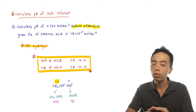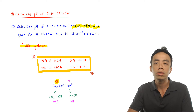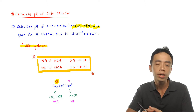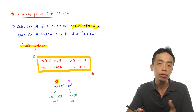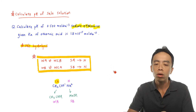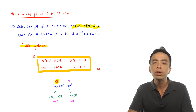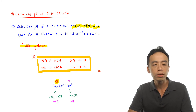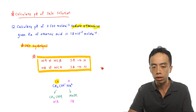For a strong base, dissociation also gives a neutral counter ion. For example, sodium hydroxide dissociates to give Na⁺ and OH⁻. Na⁺ has no tendency to reform NaOH, so Na⁺ is also neutral. This idea involving conjugate acids and bases is very important for understanding the nature of a salt.